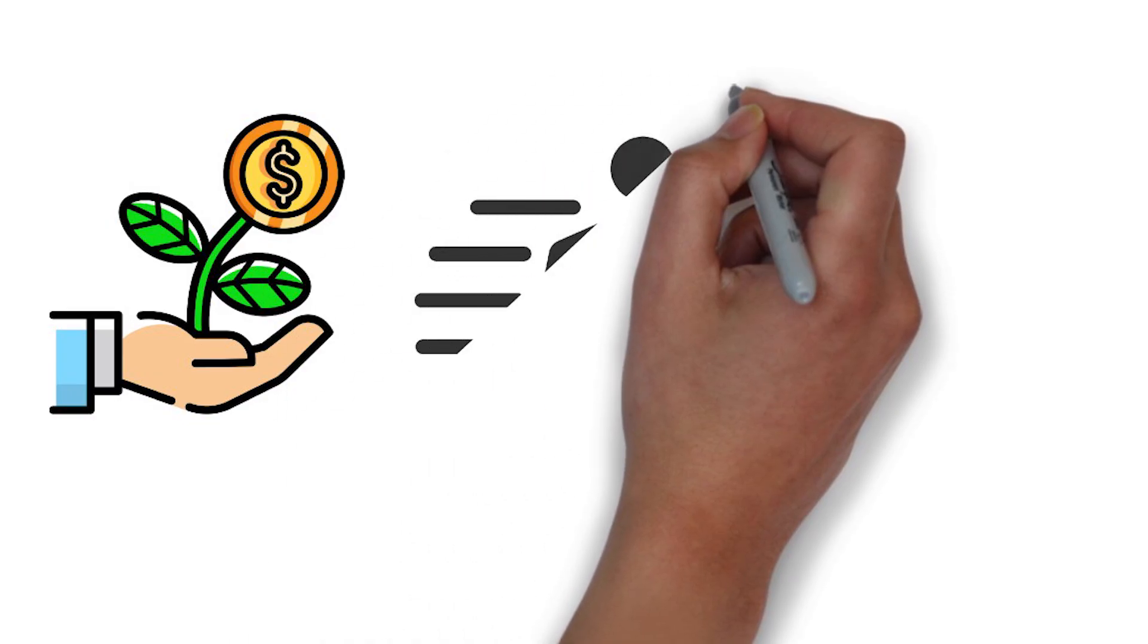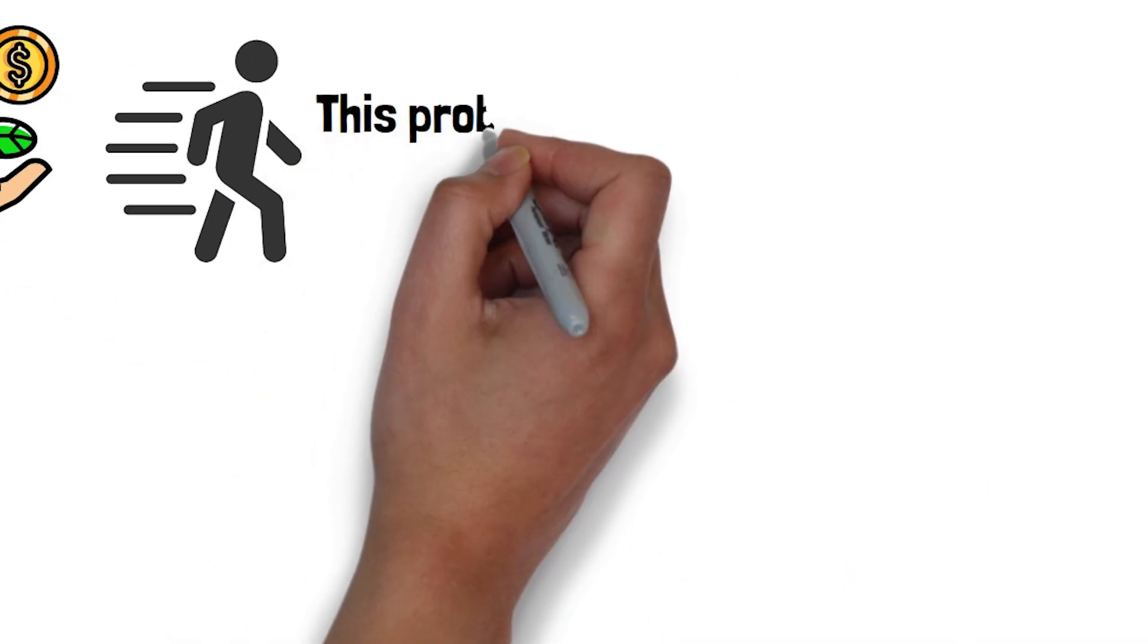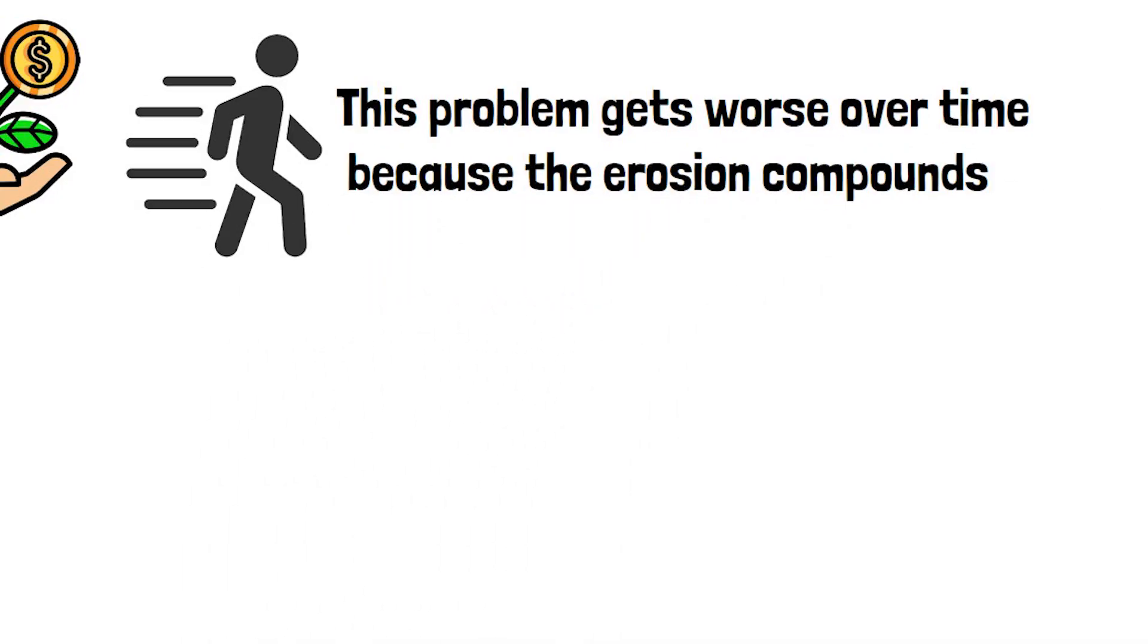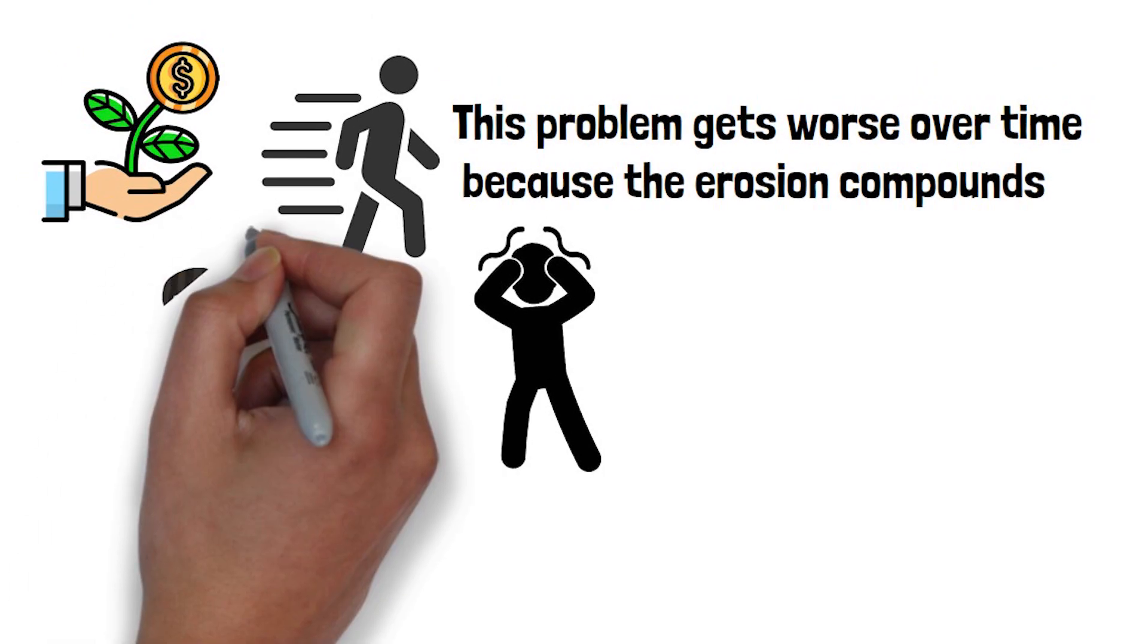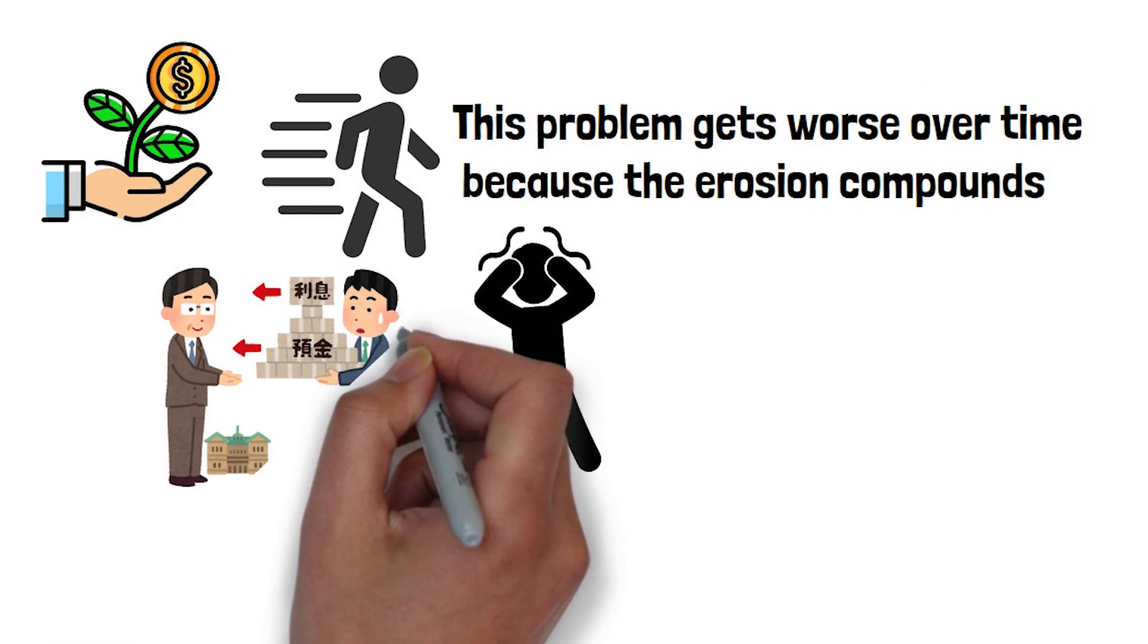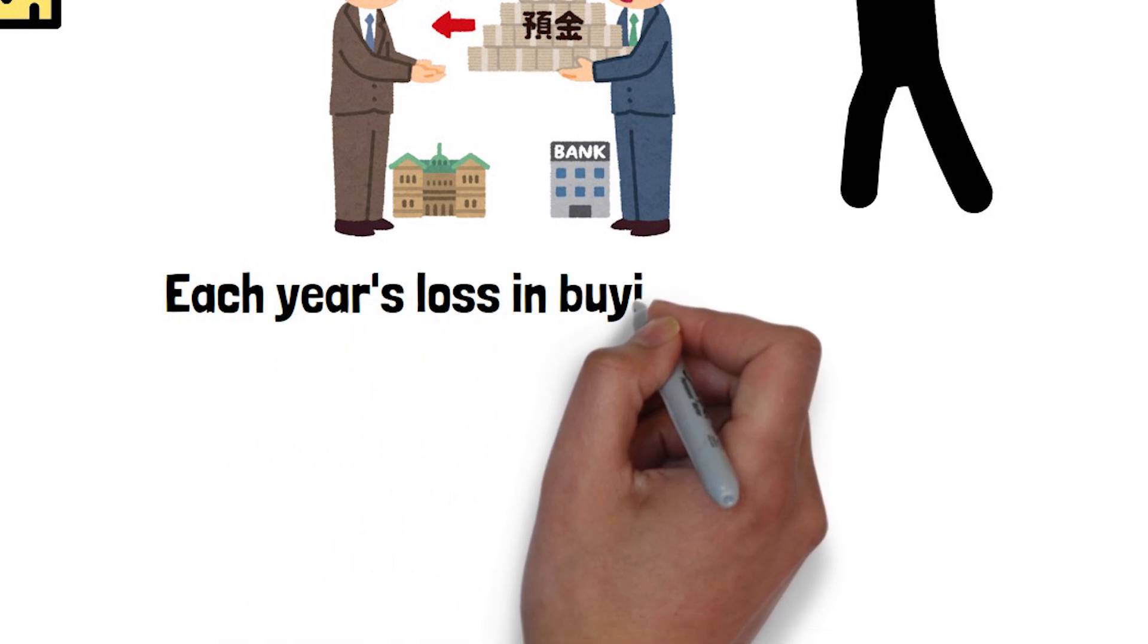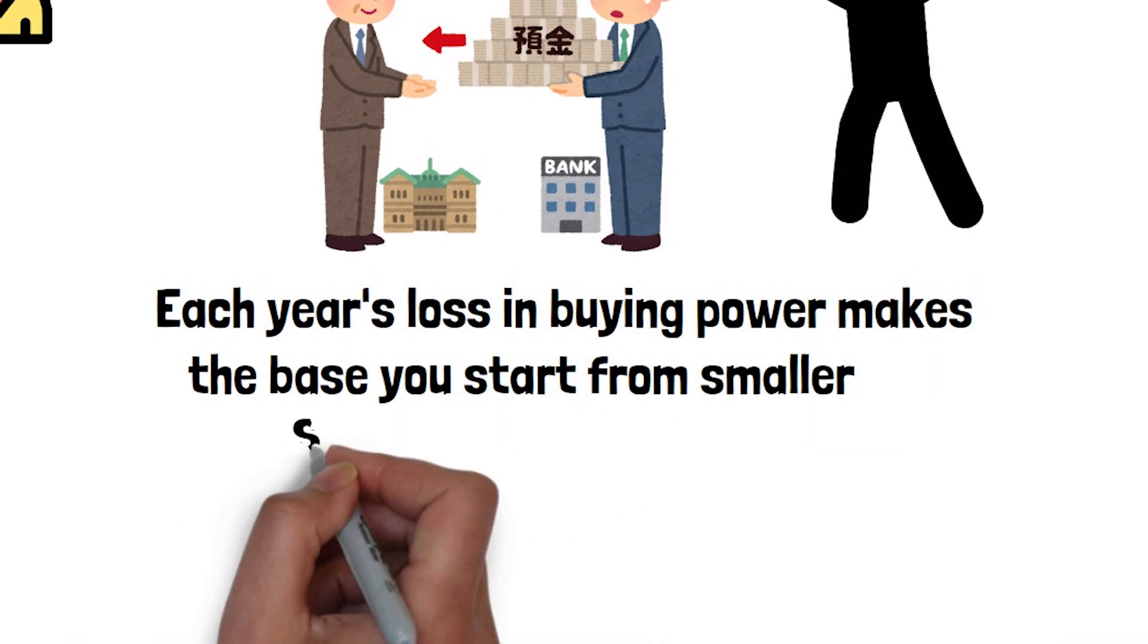Your legs are moving, but you're still being carried backward. This problem gets worse over time because the erosion compounds. Just like interest can compound in your favor, inflation can compound against you when it outpaces your returns. Each year's loss in buying power makes the base you start from smaller, so the gap widens.